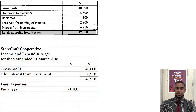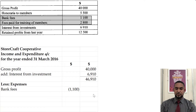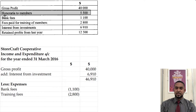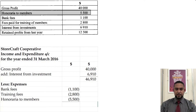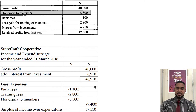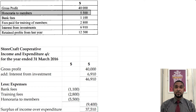So we have bank fees, fees paid for training of members, and honoraria to members — that's almost like directors' remuneration if you're familiar with limited liability companies, but from a cooperative perspective. We have a subtotal for expenses, and we take that from the income to get the surplus of income over expenditure. If you're not familiar with the terminology used with this topic, you can take a look now.